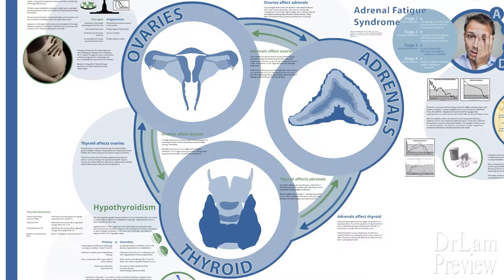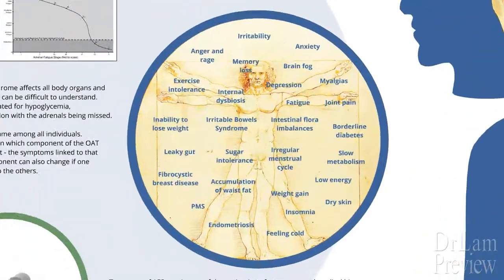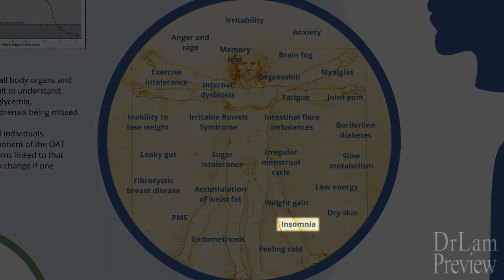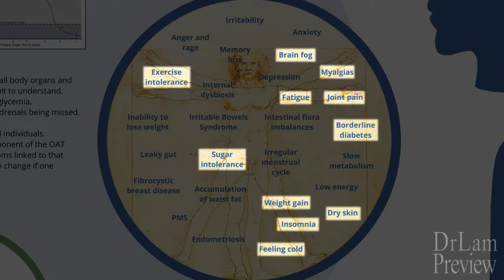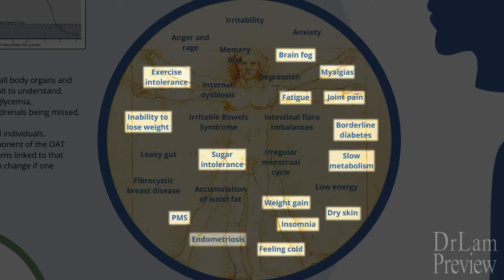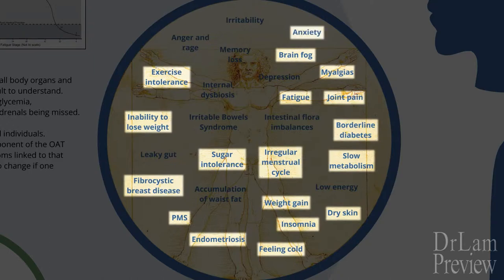The clinical problem is that when you have an ovarian-adrenal-thyroid axis imbalance, the symptoms are quite convoluted because they represent dysfunction of all three groups, and it can be quite misleading. Common symptoms include insomnia, fatigue, myalgia, weight gain, joint pain, exercise intolerance, brain fog, sugar intolerance, borderline diabetes, dry skin, feeling cold, slow metabolism, inability to lose weight, PMS, endometriosis, irregular menstrual cycle, fibrocystic breast disease, anxiety, depression, and accumulation of fat at the waistline.